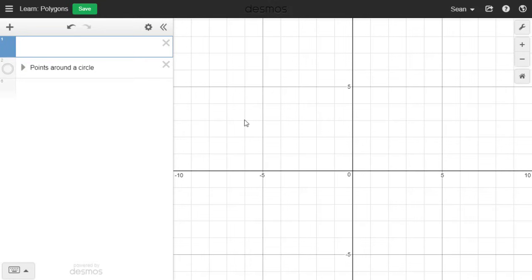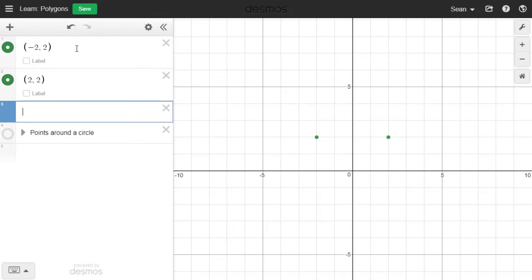Welcome to a quick video tutorial on using polygons in the Desmos graphing calculator. Let's say we wanted to make a polygon between these three points: negative two two, two two, and zero negative two.